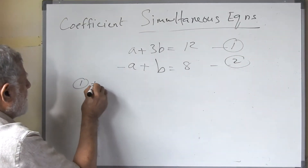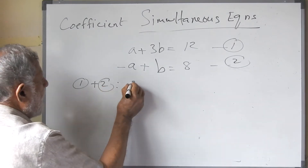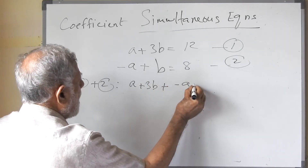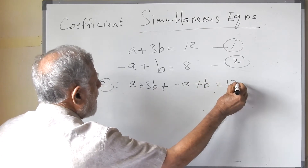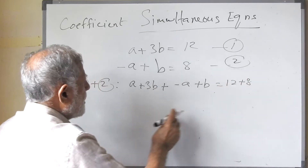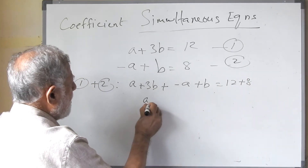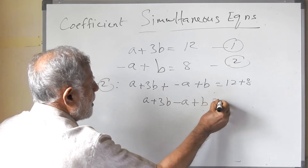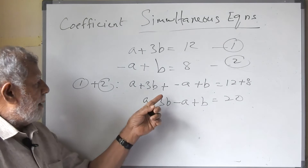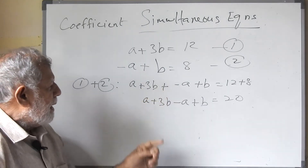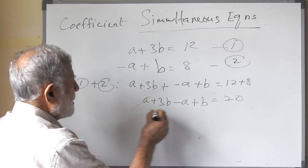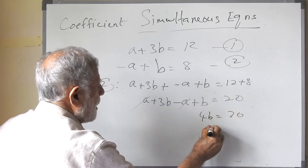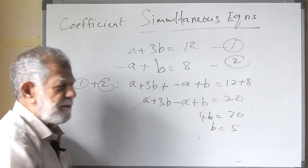So 1 plus 2 gives: a plus 3b plus (minus a plus b) equals 12 plus 8. Here plus and minus together gives minus, so a plus 3b minus a plus b equals 20. A and a get cancelled, and 3b plus 1b equals 4b. So 4b equals 20, and b equals 5.